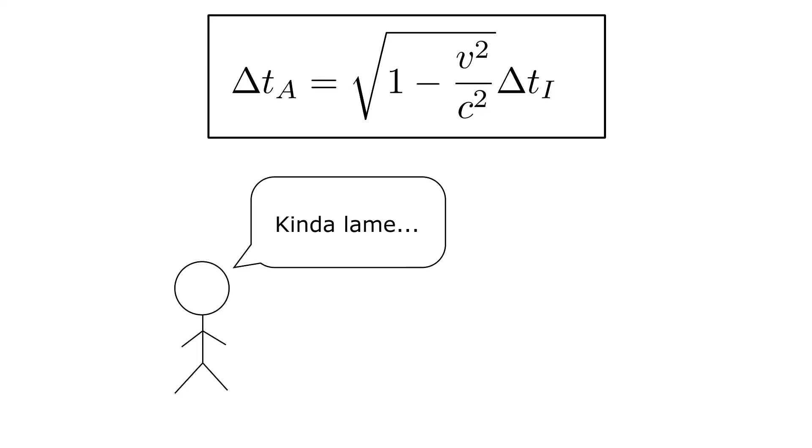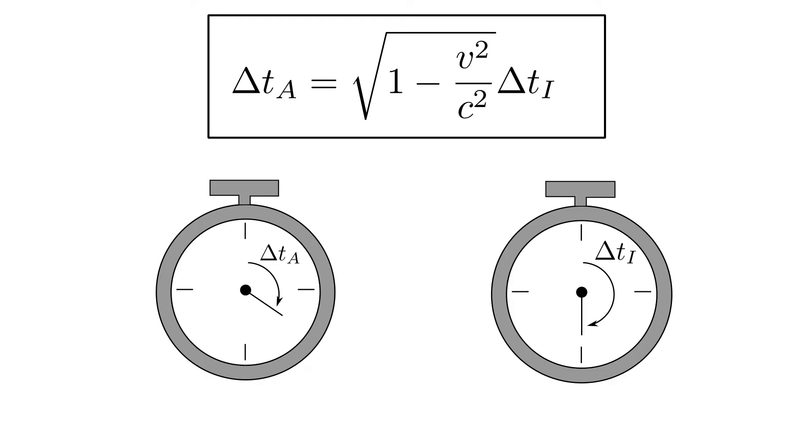This expression may not seem very special, but it has a lot of information in it. First, we can see that the amount of time measured in the two frames is not the same. In fact, since we are subtracting the v squared over c squared term, the time measured in Albert's frame is less than the time measured in Isaac's frame.